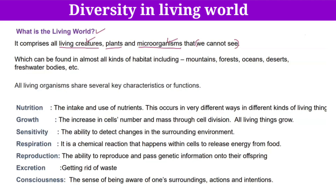We know about the living world, but where can we see this living world? We can find all types of living creatures, including plants, animals, and microorganisms, in different kinds of habitats — for example, mountains, forests, oceans, deserts, fresh water, and even marine water. We can see all living things in different conditions.